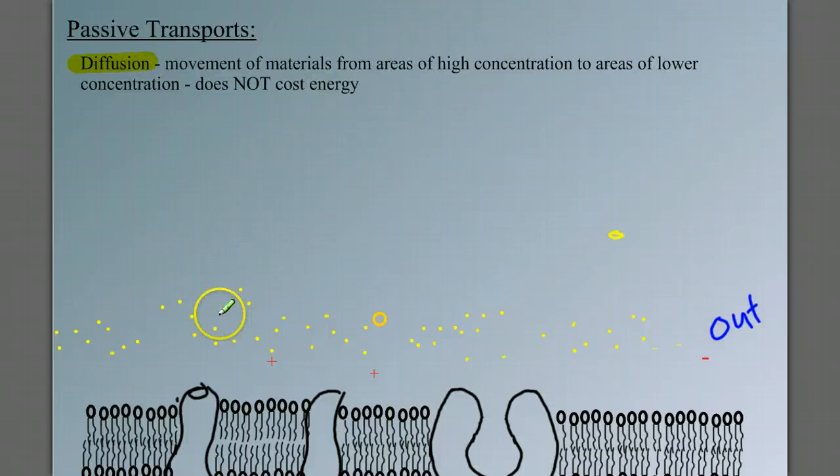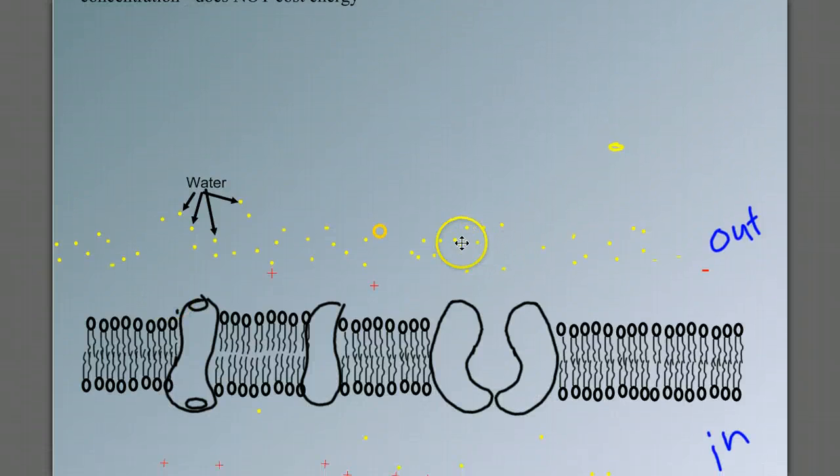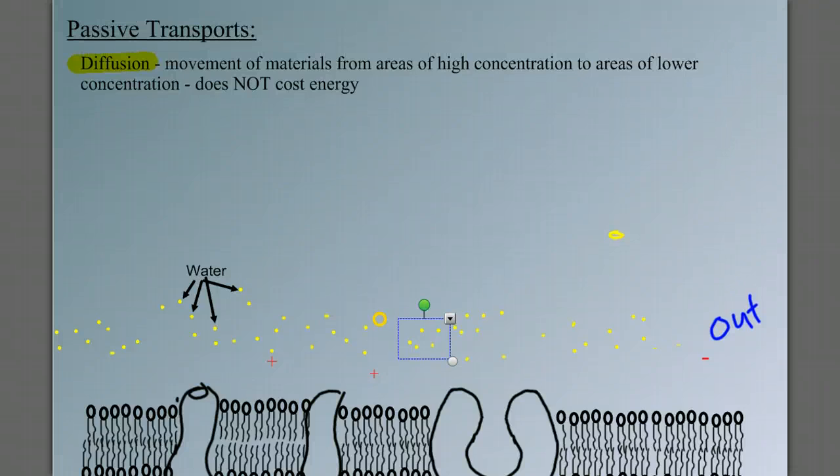Now question, what if these yellow dots represented water? If we'd let these yellow dots represent water, then this movement, this diffusion of water across the selectively permeable membrane has a special name. We call that osmosis.